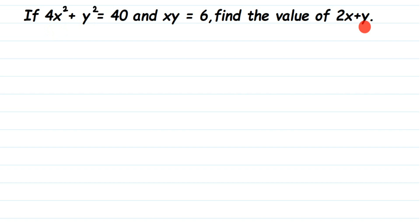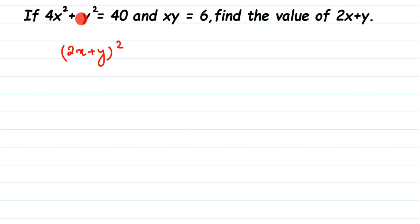So how do we find this? We take 2x + y and square it — we find the square of (2x + y). The reason we take the square is because we know the values with squares: x squared and y squared. We need to use those values to get the answer, so we take the square of (2x + y). We cannot open the bracket directly; we have to use an identity.